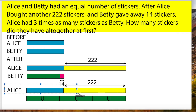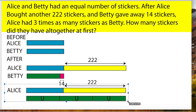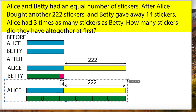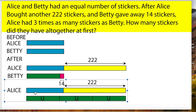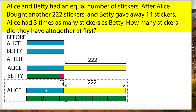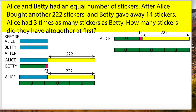Now, as you can see, Alice had three times as many stickers as Betty after. That means three units of Betty after is equal to one unit of Alice after, as shown in the model.